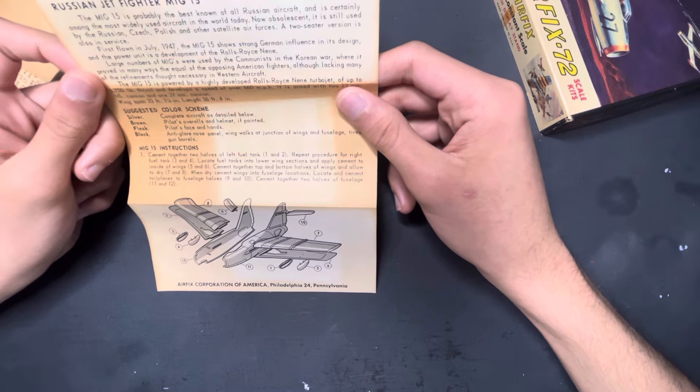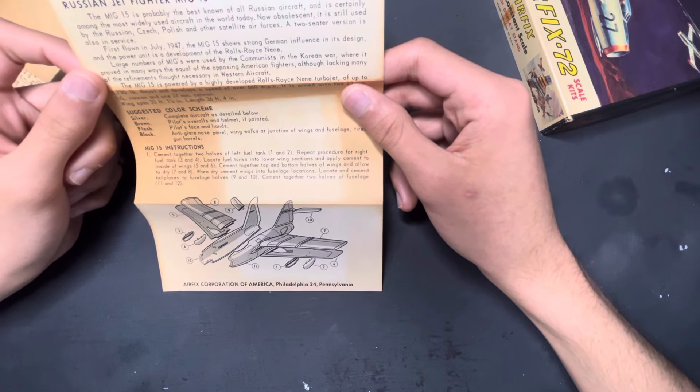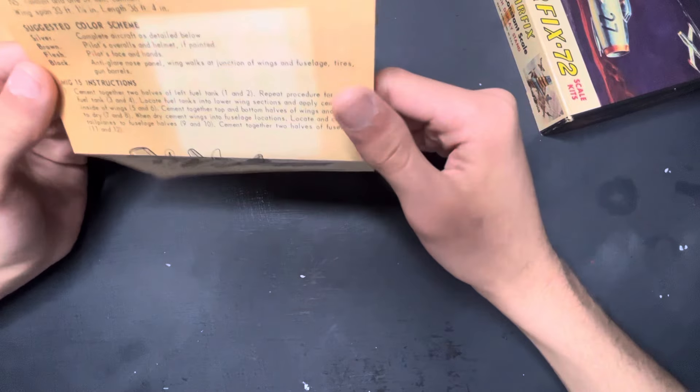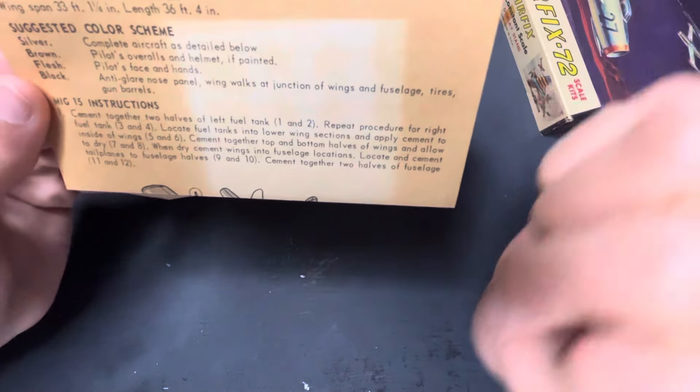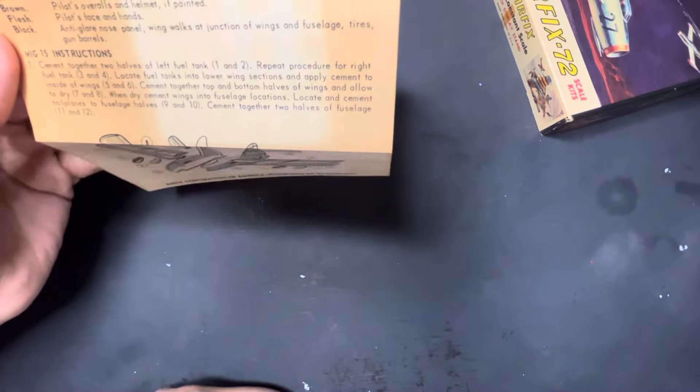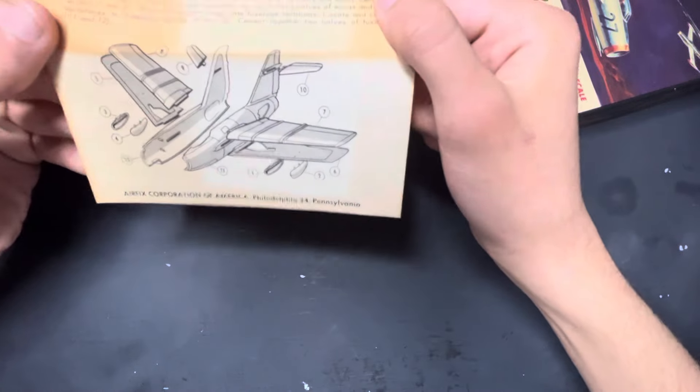The strongest and most German design power unit is developed with the Rolls-Royce Knight. It has a suggested color scheme for what you've got to do, and then it has the instructions. This is very simple for instructions. That is literally the instructions right there.